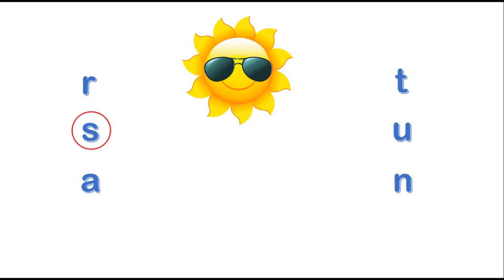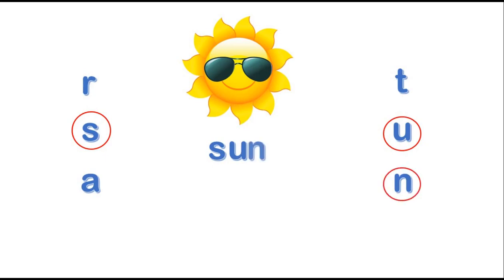What is this? Look. It's a sun. How can you write sun? S is the first letter. S is the sound. U is the second letter. A is the sound. N. N. What's this? Sun.